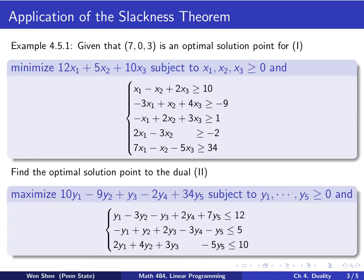Now we're going to take a look at some applications of the slackness theorem. The first one is example 4.5.1 from your textbook. Given that (7, 0, 3) is an optimal solution point for problem 1, the min problem with three variables and five constraints, use that to find the optimal solution for the dual, which has five variables coming from five constraints and three constraints coming from the three variables. You can verify that these are duals of each other.